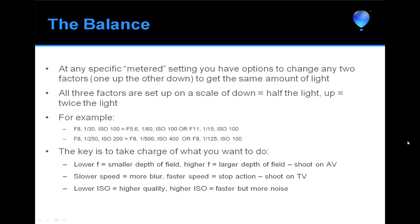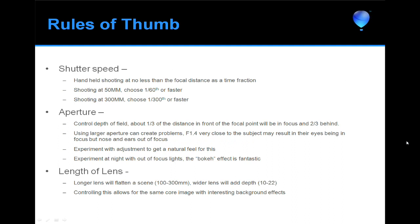A couple of rules of thumb: for handheld shooting, use a shutter speed no slower than the focal length of the lens expressed as a fraction. Shooting at 50mm? Use at least 1/60th of a second. Using a 300mm lens? Use at least 1/300th of a second or faster. Otherwise you'll get motion blur — I've talked to people on the soccer field who thought they had a bad lens when they were actually shooting at 1/30th of a second at 300mm.